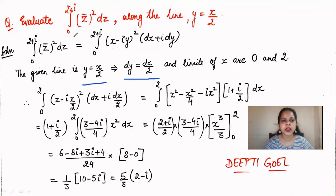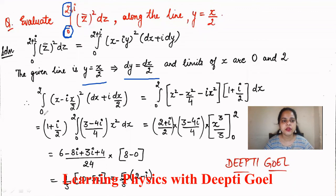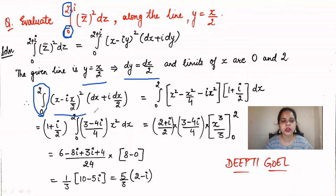Converting to x: the limits are 0 to 2 for x. Substituting y = x/2 and dy = dx/2 gives (x - ix/2)² · (dx + i·dx/2). Simplifying and integrating, we get the result equal to (5/3)(2 - i).